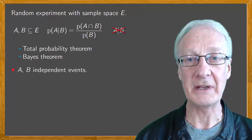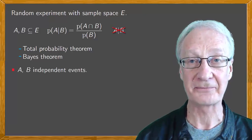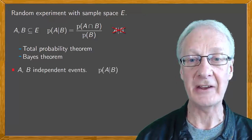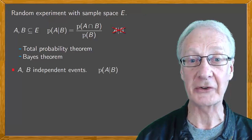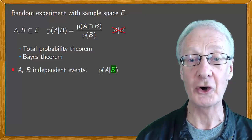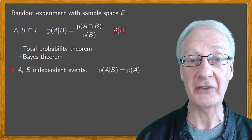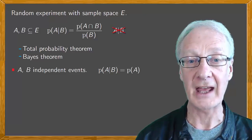Now, suppose that A and B are independent events. The probability of A if B isn't influenced by whether B has occurred or not. So it's the same as the probability of A.